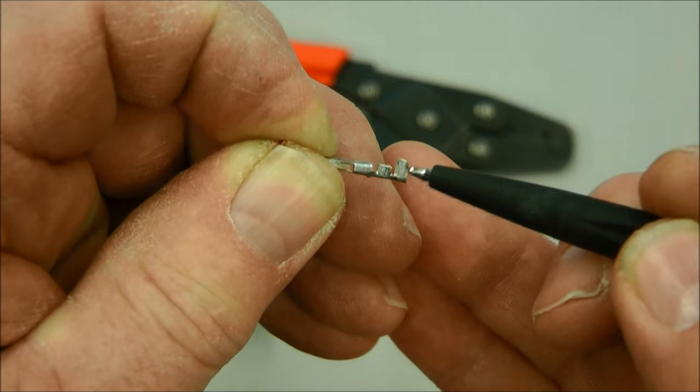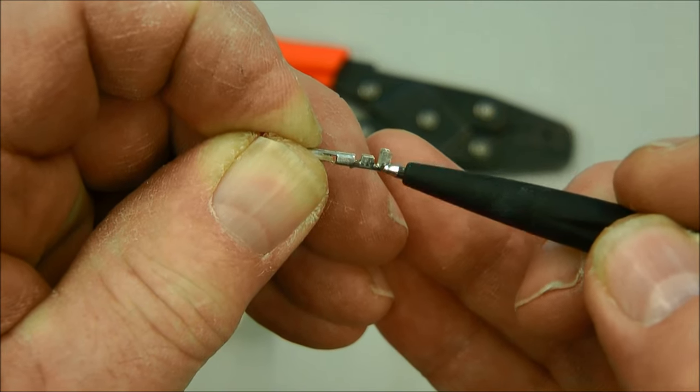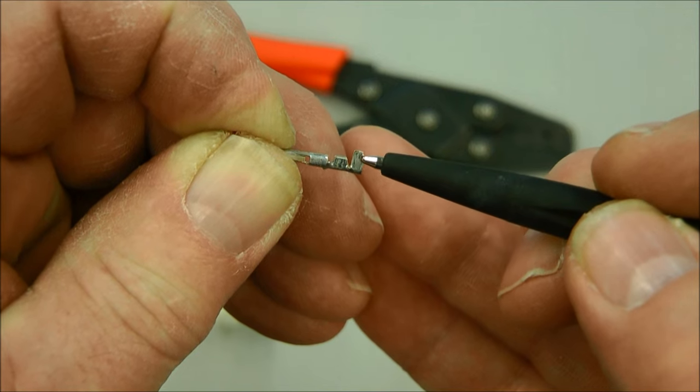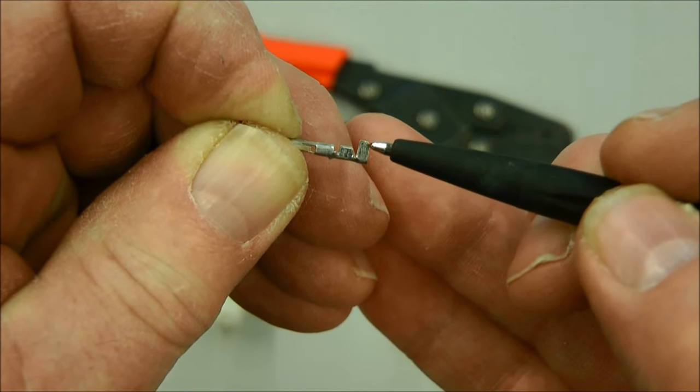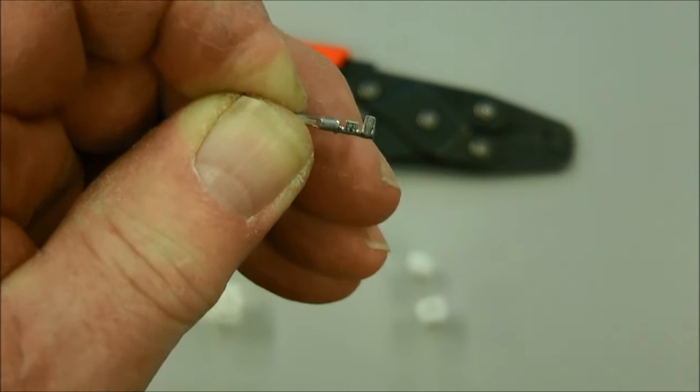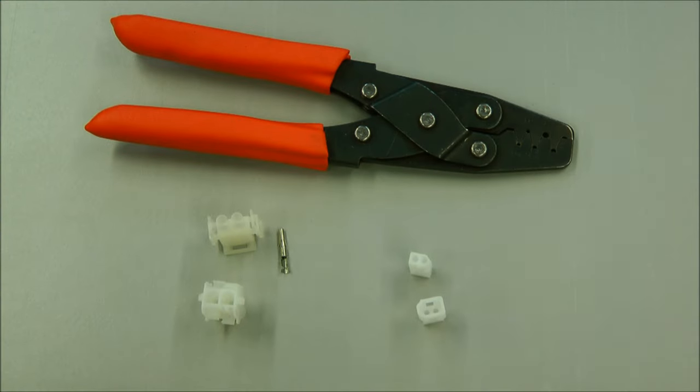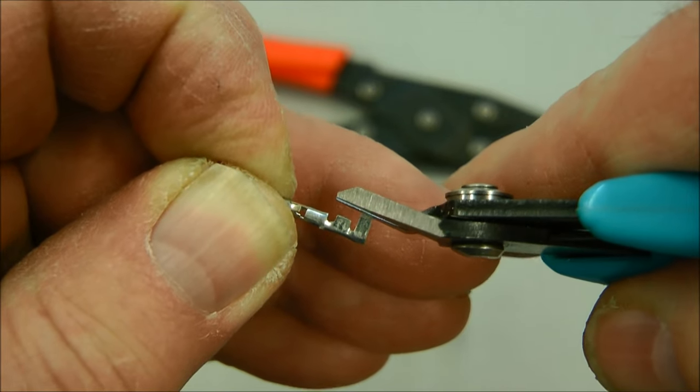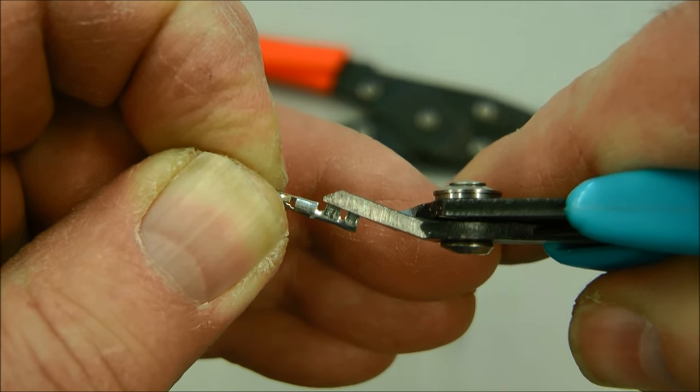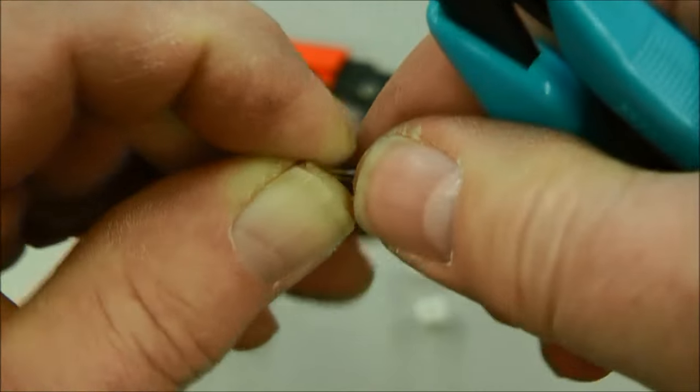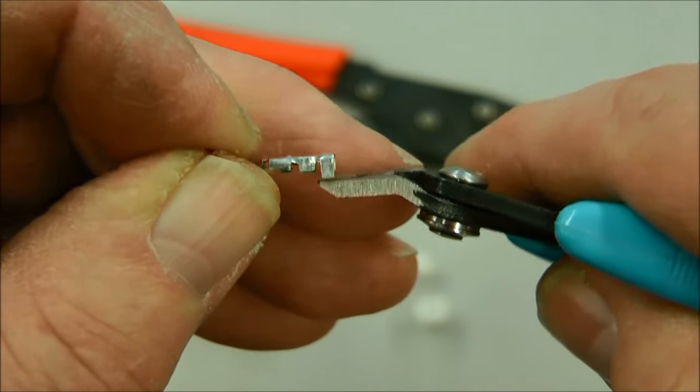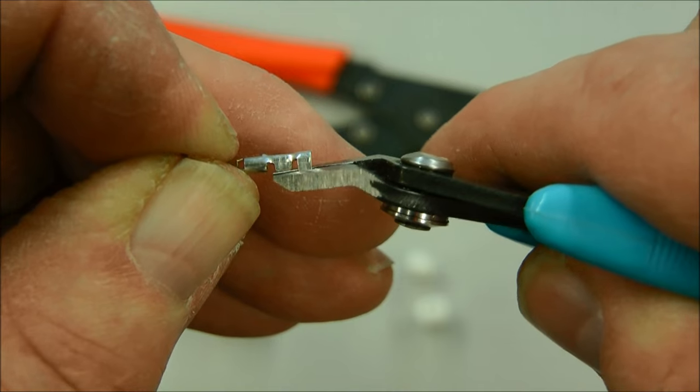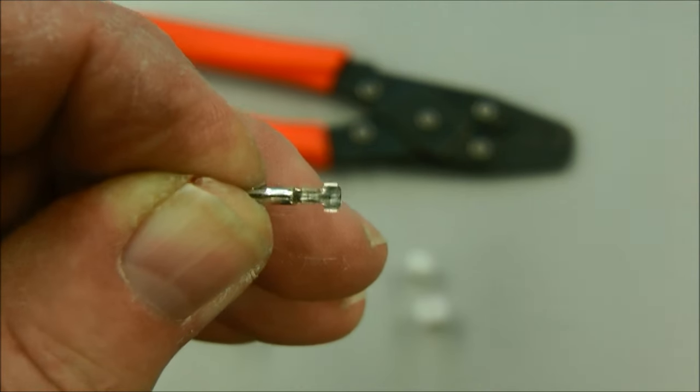On these particular pins this wing here tends to be a little bit too long for the 20-22 gauge wire. So I like to clip it short. And we'll do that here. Like so.